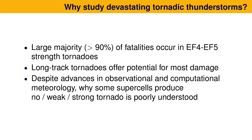Why do we study these types of storms? The large majority of fatalities and damage occur with high-end EF-4 to EF-5 strength tornadoes. EF refers to the Enhanced Fujita scale, which is based upon damage indicators — a lot of engineering went into that. Ted Fujita, a pioneer at the University of Chicago in the 60s and 70s, came up with the scale to help intuit what kind of winds cause the damage we see. Despite advances in both observational and numerical techniques, we still don't know why some supercells produce these high-end tornadoes and others produce very weak, transient tornadoes or no tornado at all.